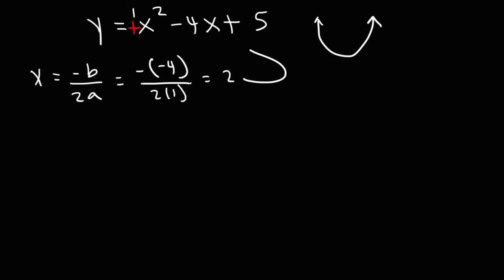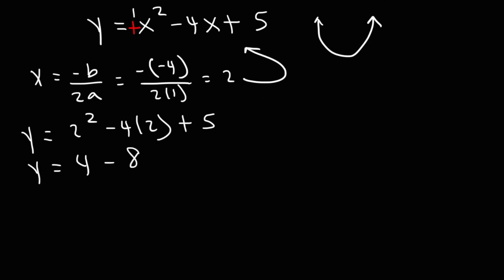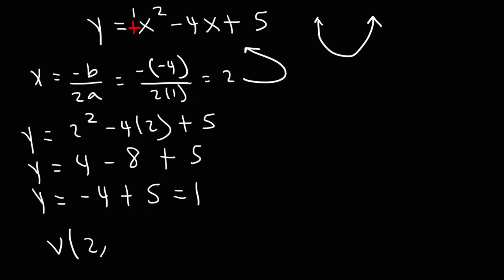Now that you have x equals 2, plug it back into the function to get y. So it's 2 squared minus 4 times 2 plus 5. Two squared is 4, and 4 times 2 is 8. Four minus 8 is negative 4, and negative 4 plus 5 is 1. So the vertex is at (2, 1).